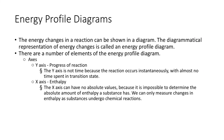Now we go to energy profile diagrams. We can show energy changes in a chemical equation, but we can also show them in a diagram. This diagrammatical representation of the amount of energy change is called an energy profile diagram. There are a number of elements to an energy profile diagram — first of all, the axes. On the y-axis is the progress of reaction.